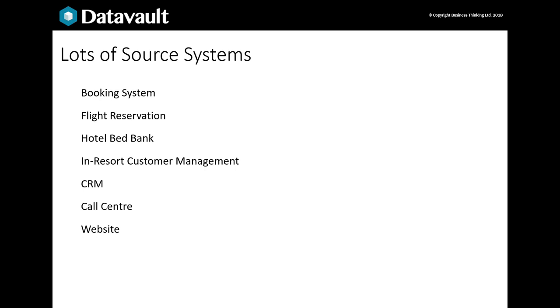CRM is used to support the call centre and respond to customer service requests and complaints. A call centre system is used to route calls, support queues, implement a menu system, dial out and support efficient and effective call centre operations. The website will promote the holidays on offer, provide information about the business and act as an order-taking front-end to the booking system. Email is used as one channel for marketing and communicating with customers and suppliers. Finance tracks invoicing, payments and refunds with suppliers and customers, as well as tracking budgets, calculating profitability and making cash flow forecasts.